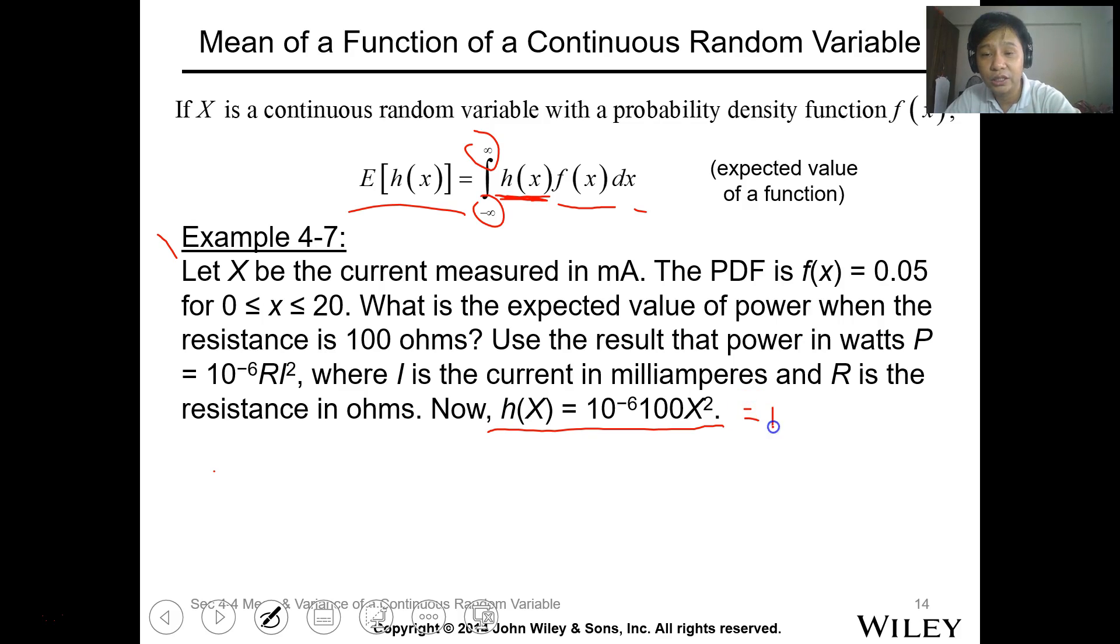And the value of H of X is 10 to the negative 6 times 100 X squared. So this is 10 to the negative 4 X squared. So the expected value of H of X is the integration of H of X, 10 to the negative 4 X squared dx from 0 to 20.